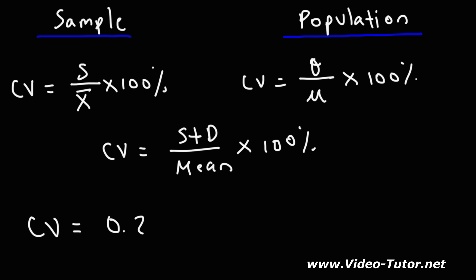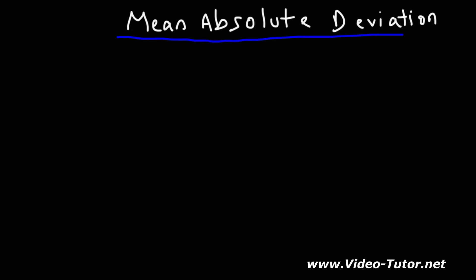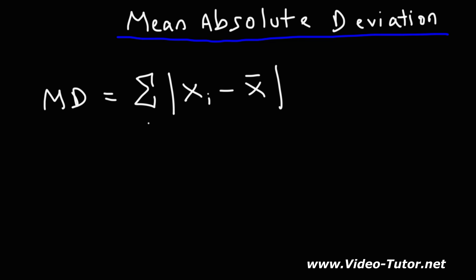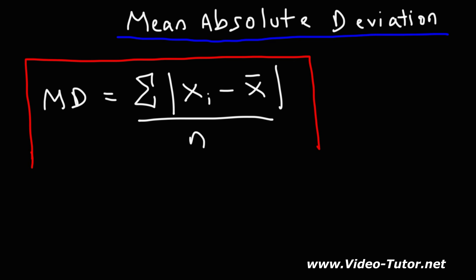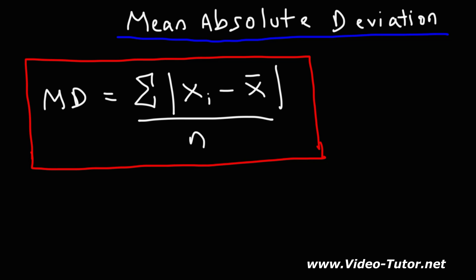A coefficient of variation of 0.25 means the standard deviation is 25% of the value of the mean. The mean absolute deviation (MAD) is the sum of the absolute differences between each data point and the sample mean, divided by n. It's similar to standard deviation, but you take absolute values instead of squaring the differences, and you don't take a square root at the end.